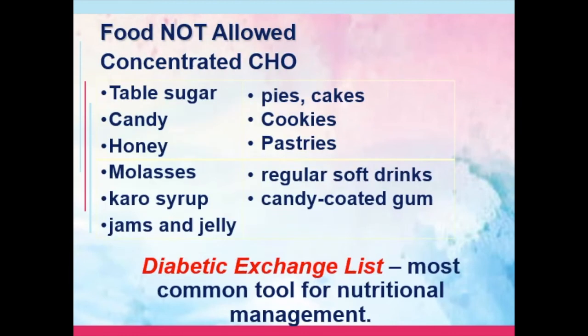These are the foods not allowed for the patient with diabetes: concentrated carbohydrates are not recommended. Examples include table sugar, candy, honey, molasses, corn syrup, jams and jelly, pies, cakes, cookies, pastries, regular soft drinks, soda, and candy-coated gum. The American Diabetes Association recommendation for calorie distribution is 50 to 60 percent carbohydrates, 30 to 35 percent fats, and 10 to 20 percent proteins, with fiber recommended at 25 grams daily. The diabetic exchange list is the most common tool for nutritional management, providing equivalent servings for each food.